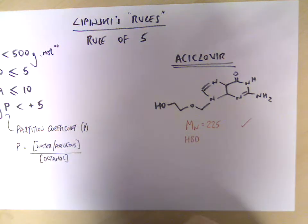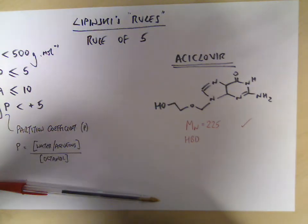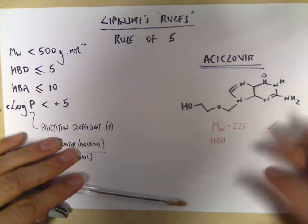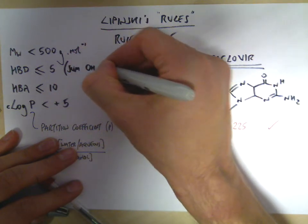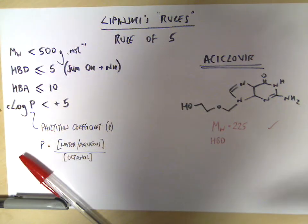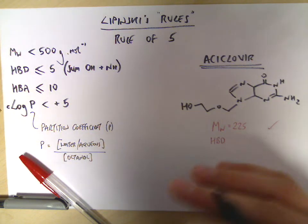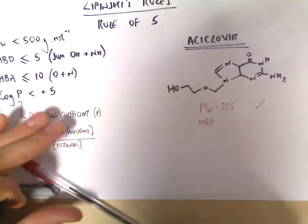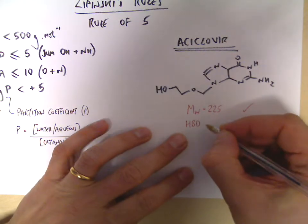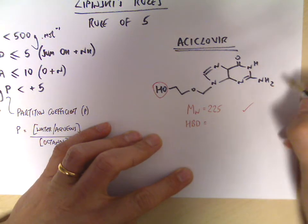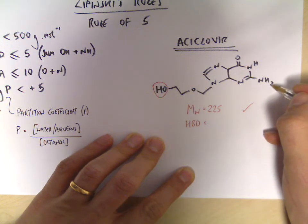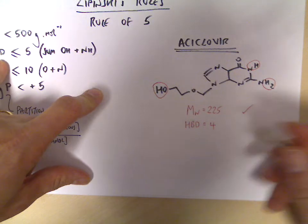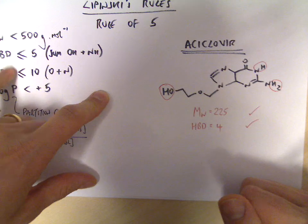The number of hydrogen bond donors — as I mentioned in the last video — relates to oxygen or nitrogen atoms which have a hydrogen attached. We can define this as the sum of your OH and NH groups, and possibly SH, but most drugs just contain oxygen and nitrogen as their hydrogen bond donors. By the same token, hydrogen bond acceptors are typically oxygen or nitrogen. Looking at acyclovir, there is one here, two here, and one here — so we have four hydrogen bond donors, and that is less than five, so that's a tick.